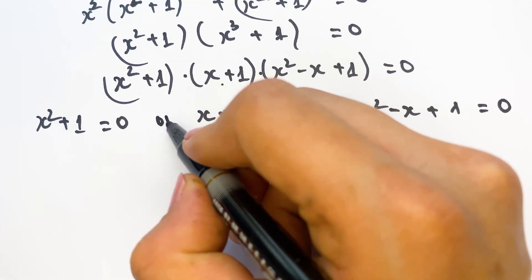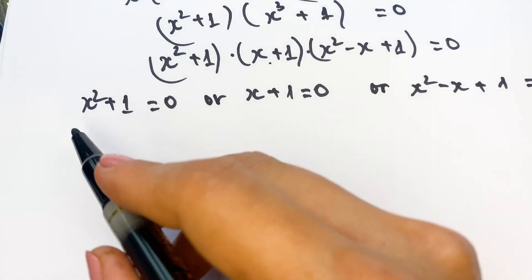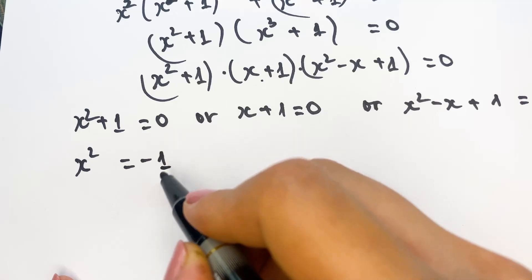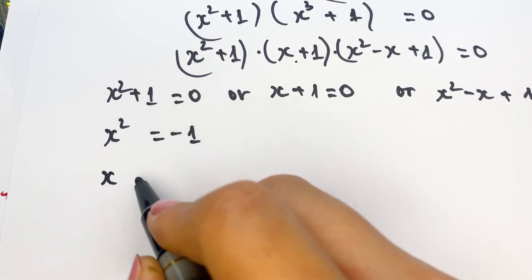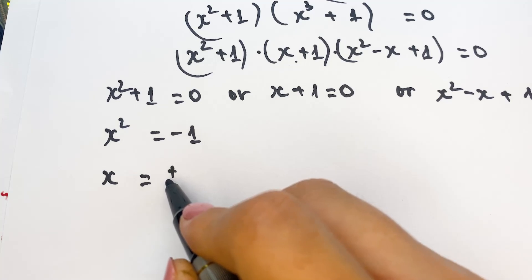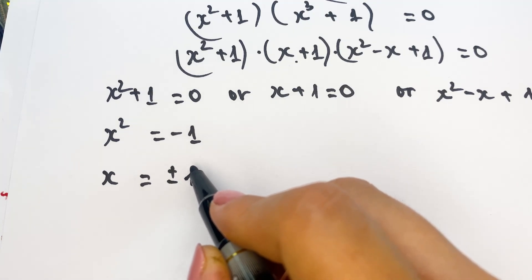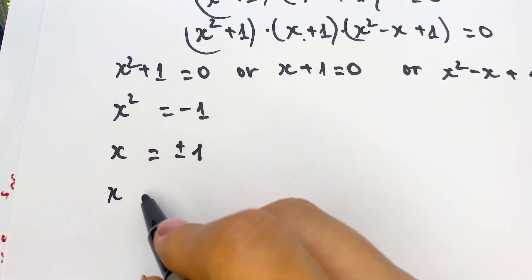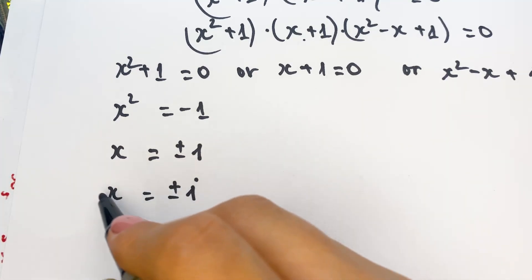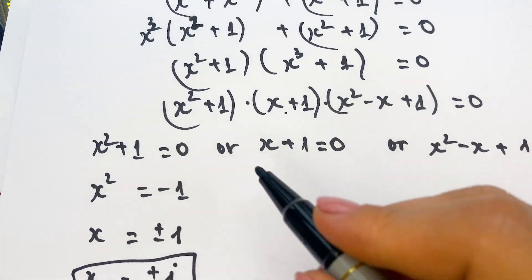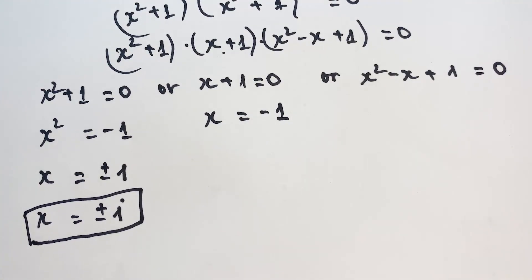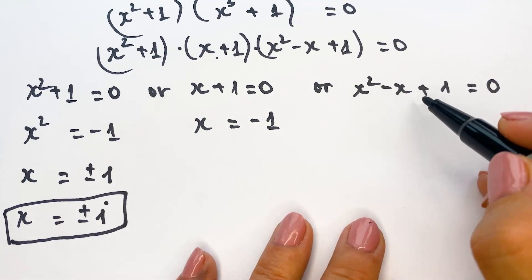For the first equation, x² + 1 = 0, we get x² = -1, so x = ±i. These are complex numbers, giving us two values. For the second equation, x + 1 = 0, we get x = -1. For the third equation, we apply the quadratic formula.